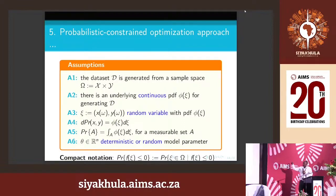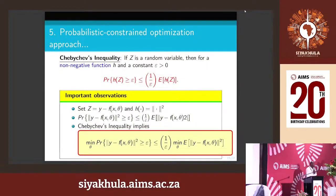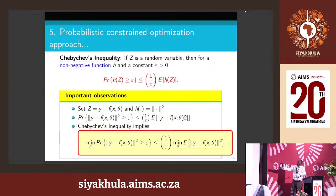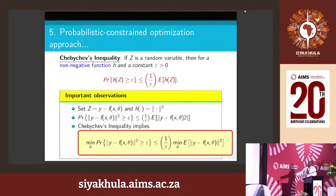In general we have these assumptions, and I use compact notations. I go to the classical Chebyshev theorem. It states: if you have a random variable Z and a non-negative function H, the probability of H(Z) being greater than or equal to a number Y is less than or equal to 1/Y times the expected value. That means the probability is bounded by the expected value. If you call Z this random variable with the square root function, you get this representation.